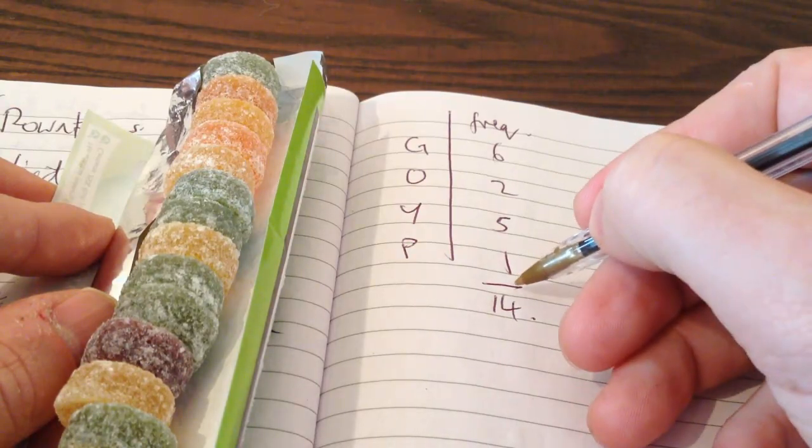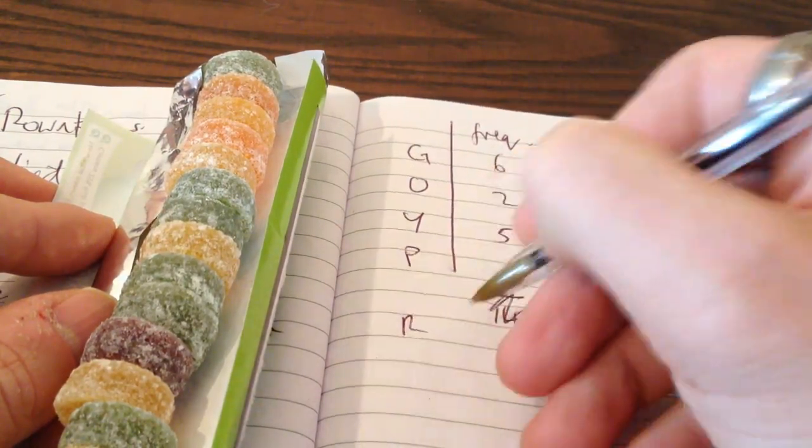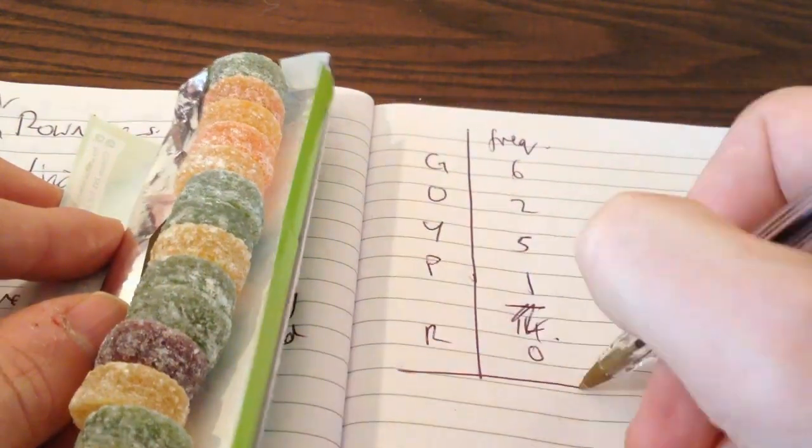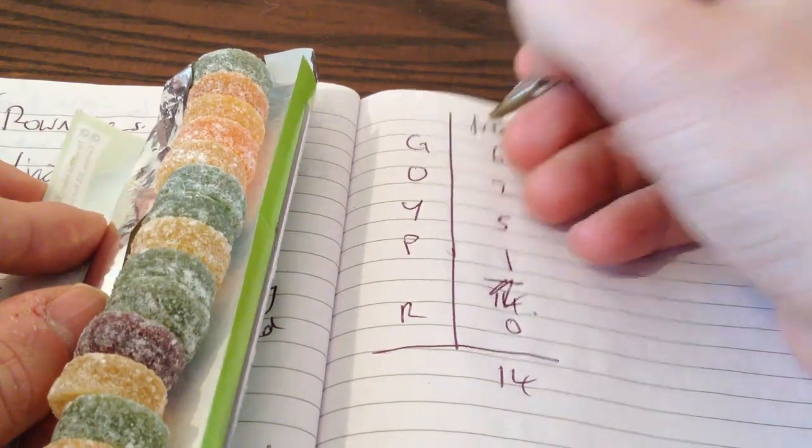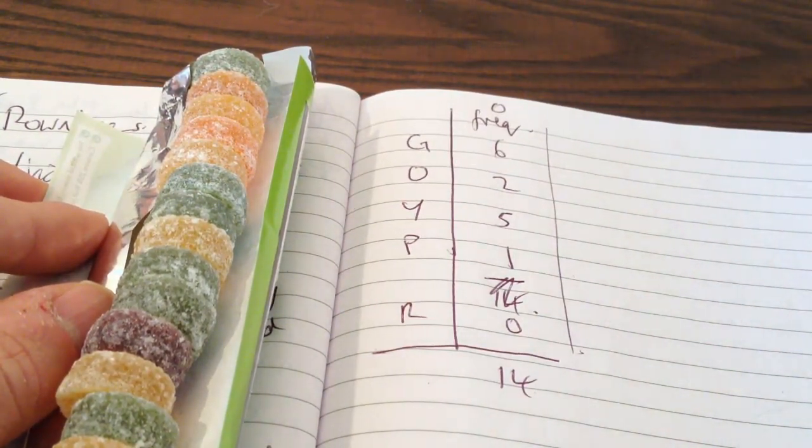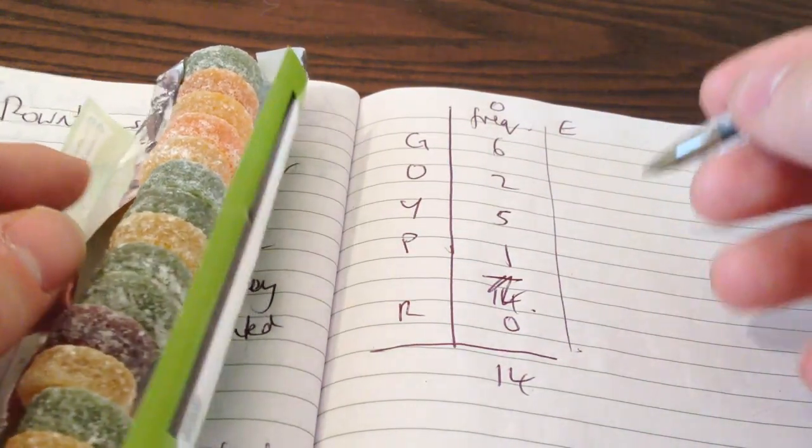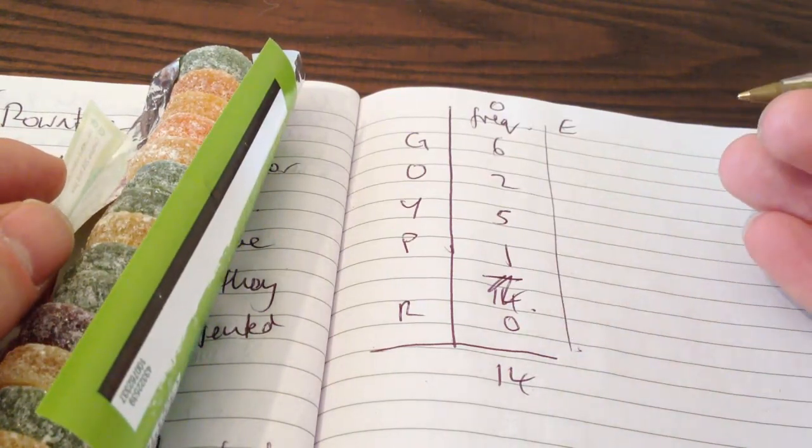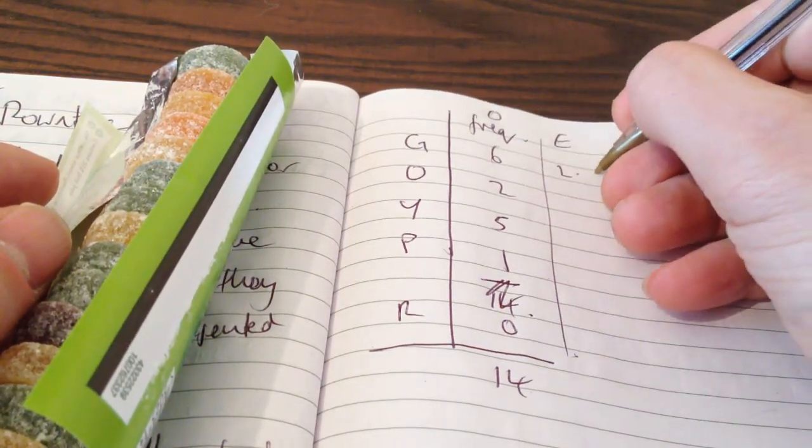Well that's good I think. I'm actually going to add in an extra colour for the red ones that should be there but aren't. So a total of fourteen. Those are my observed frequencies. Fourteen sweets in five colours. So my expected number for each one, assuming they were equally distributed, is going to be fourteen divided by five because there's five colours.